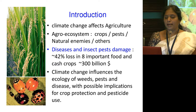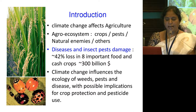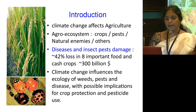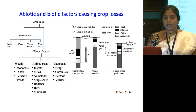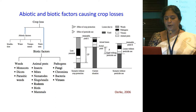As we all know, the agro-ecosystem consists not only of crops but also the associated things such as pest natural enemies and others. When we look at disease and insect pest damage, approximately 42% of loss in eight important food crops and cash crops, amounting to $300 billion, is happening almost annually. Climate change influences the ecology of weeds, pests and diseases with possible implications for crop protection and pesticide use.